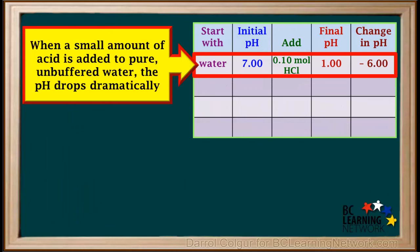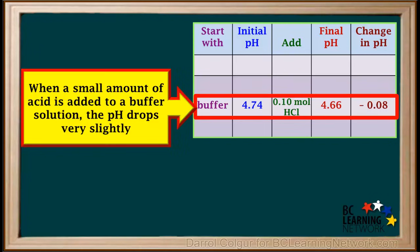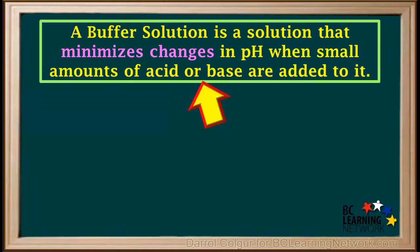To summarize: when a small amount of acid is added to pure unbuffered water, the pH drops dramatically. And when a small amount of base is added to pure unbuffered water, the pH rises dramatically. But when a small amount of acid is added to a buffer solution, the pH drops very slightly. A buffer solution minimizes changes in pH when a small amount of acid or base is added to it.